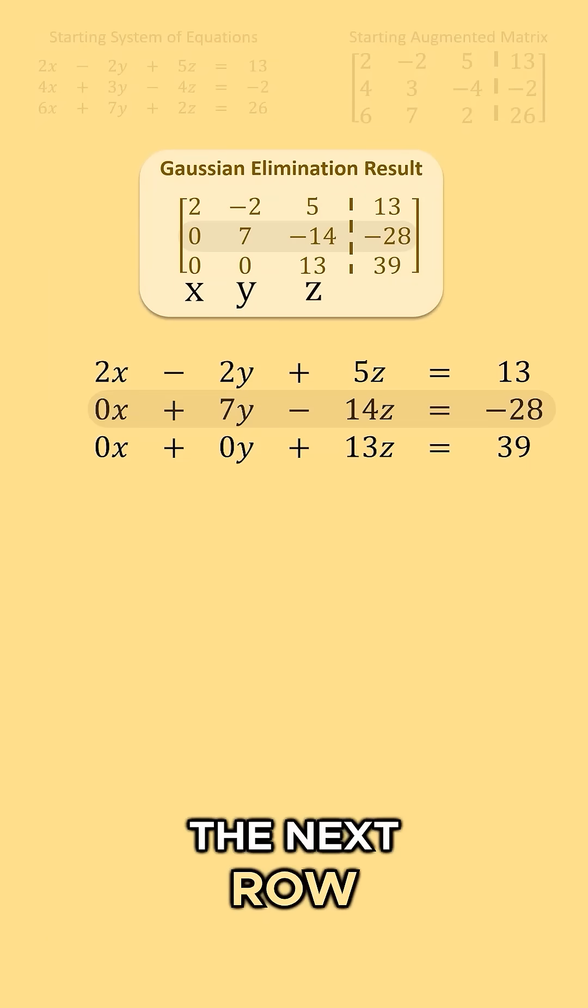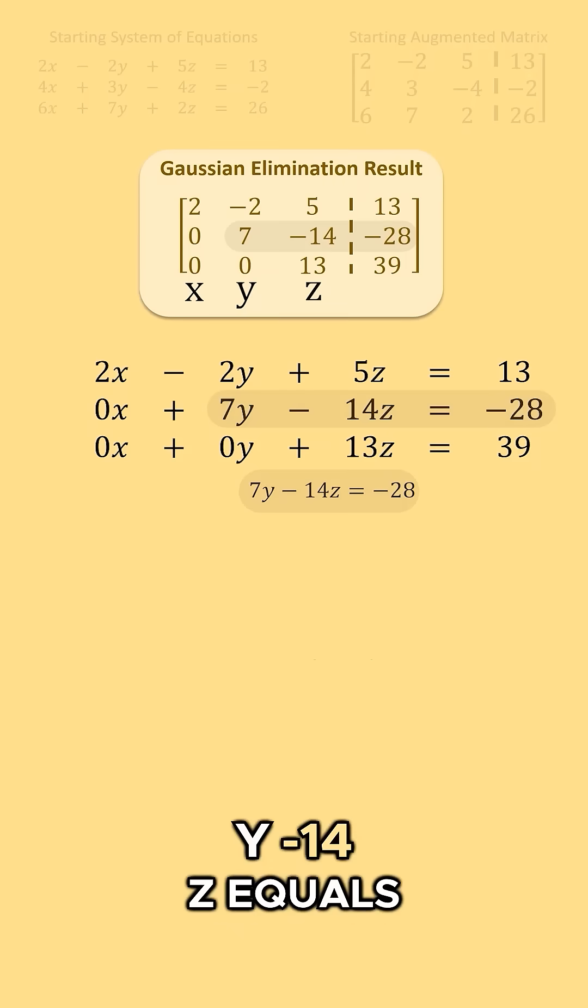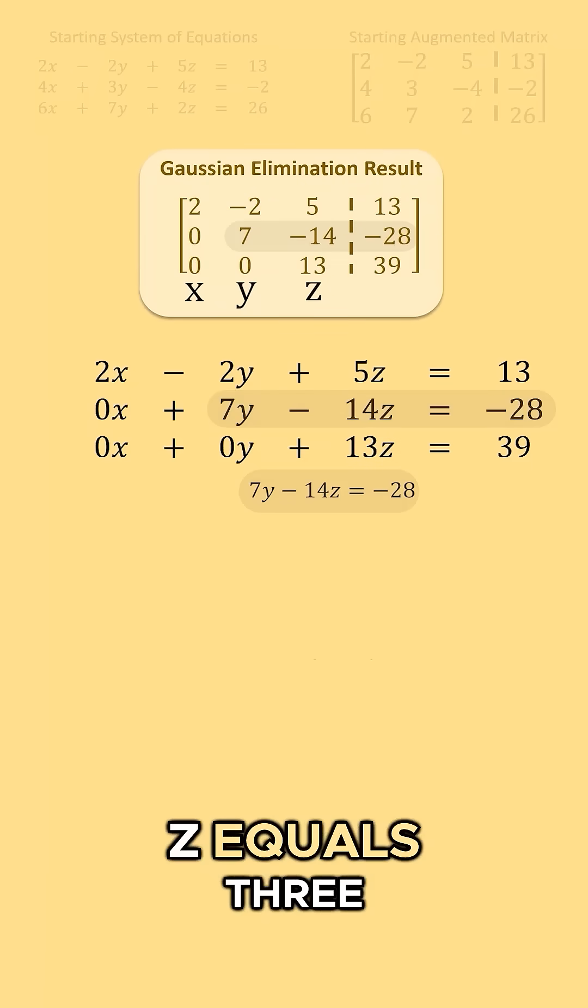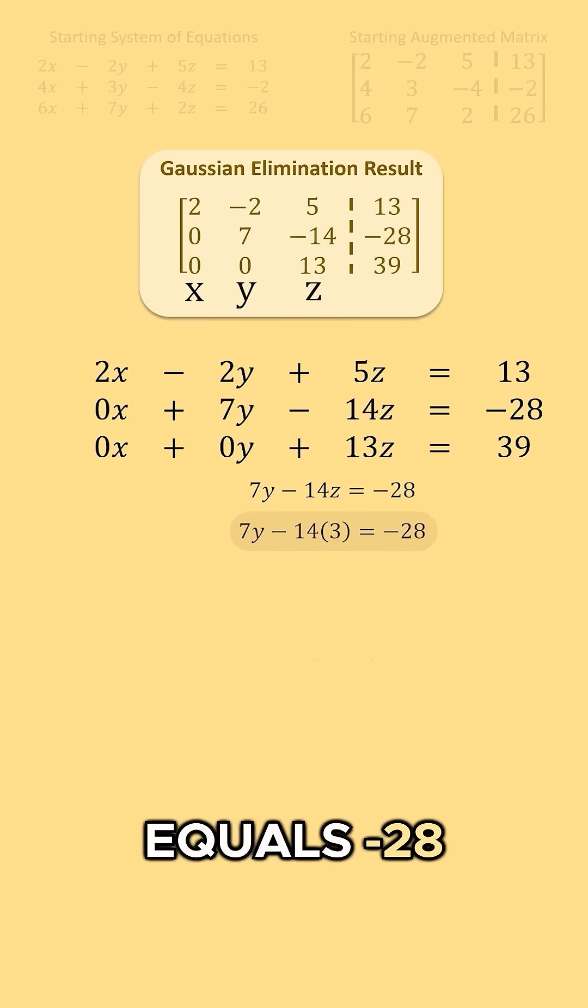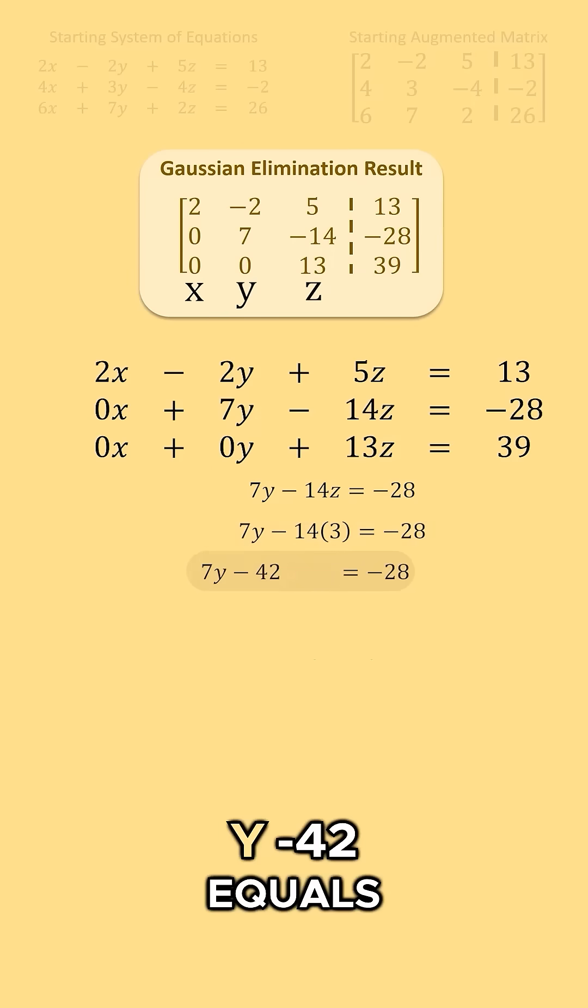Going up to the next row, we have 7y minus 14z equals negative 28. But we already know z equals 3, so we have 7y minus 14 times 3 equals negative 28. This gives us 7y minus 42 equals negative 28.